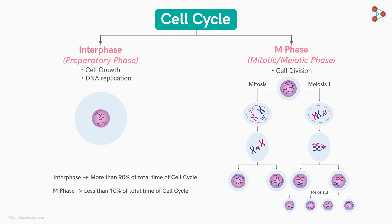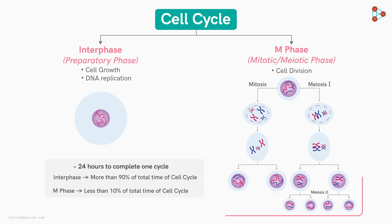All important functions — growth, duplication of genetic material, synthesis of newer compounds and organelles — are carried out during the interphase. It is believed that cells take approximately 24 hours to complete one cycle, though this duration can vary from organism to organism and cell type to cell type. At the end of the cycle, the new cells produced can start the exact same process all over again, which is why it is called a cycle — it does not follow a linear pathway.